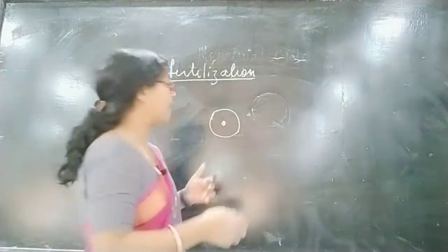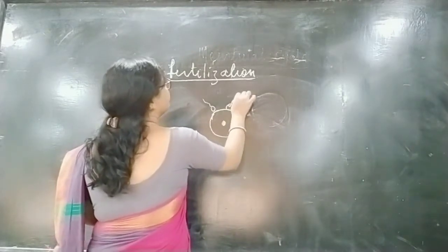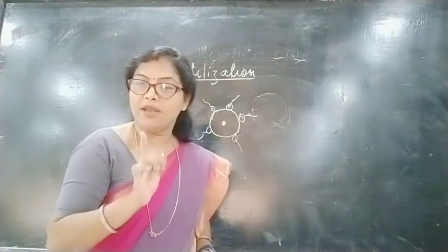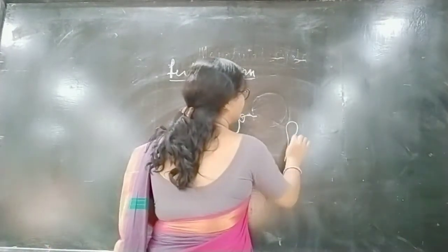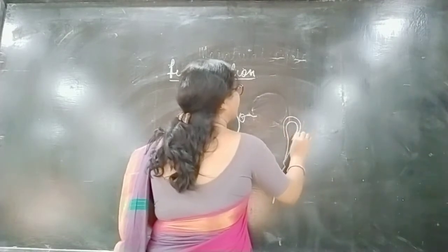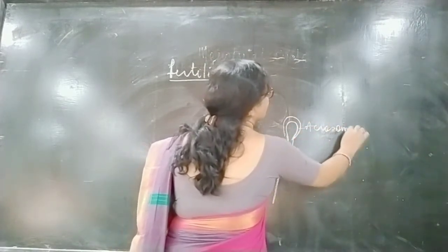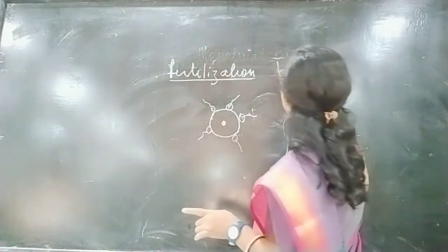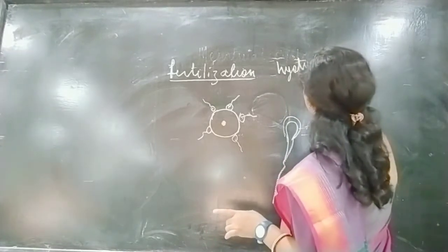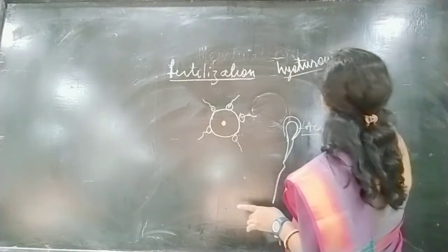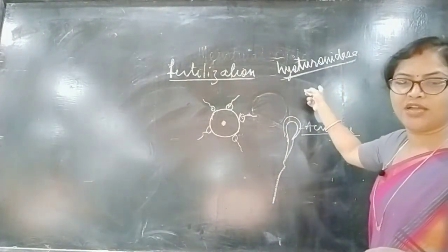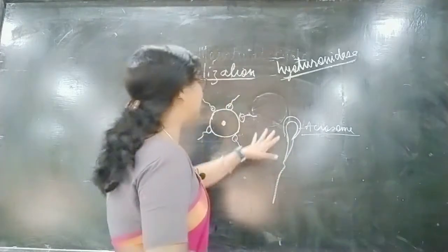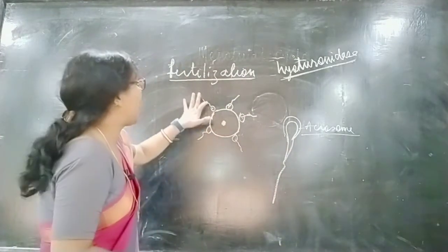How does this process occur? There are so many sperms that come and try to enter. The head part of the sperm has an external covering-like structure which is known as the acrosome. This acrosome releases an enzyme called hyaluronidase. This hyaluronidase enzyme, secreted by the acrosome of the sperm, degenerates the external part of the ovum and allows entry inside.